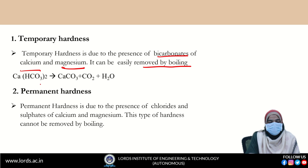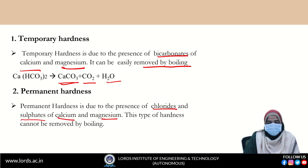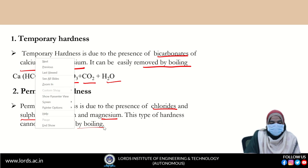Let's see the reaction: calcium bicarbonate when heated gives calcium carbonate, carbon dioxide is given out, and water is formed. While permanent hardness is due to the presence of chloride, sulfate, calcium, and magnesium ions. This type of hardness — permanent hardness — cannot be removed by simple boiling.